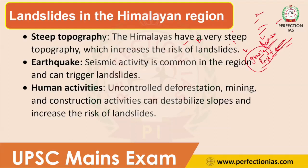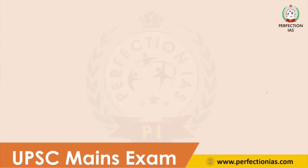The next reason is human activity. Uncontrolled deforestation, mining, and construction activities are ongoing in many tourist destinations in the Himalayan region. These activities destabilize the slope. For example, while constructing roads in the Himalayan region, we are cutting into and destabilizing the slope. Because of such human activities, landslides are increasing in the Himalayan region.